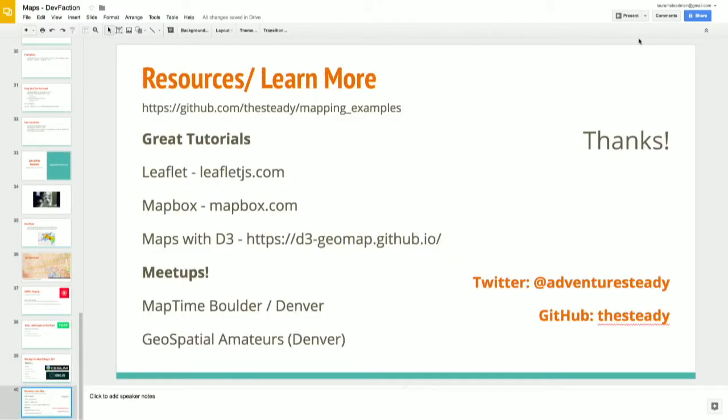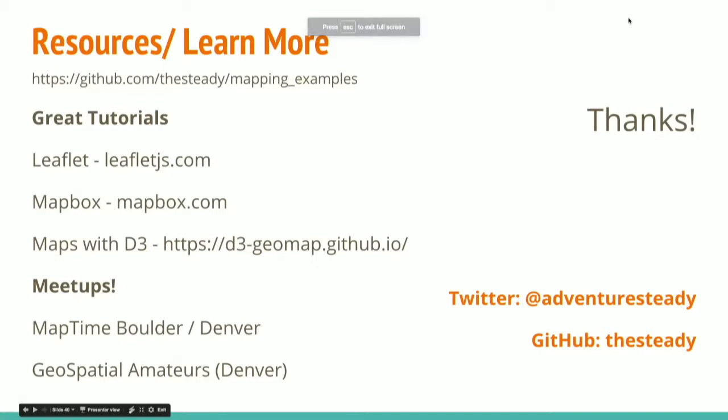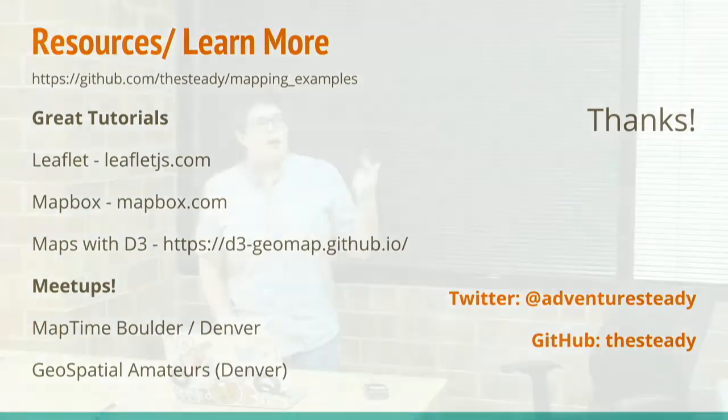That's it — I've talked enough. If you want to learn more, the GitHub repo has all the code examples I showed you. There are really great tutorials from Leaflet and Mapbox. If you're interested in mapping with D3, there's D3 GeoMap. If you're really into it, there are meetups — MapTime is affiliated with OpenStreetMap and there's one in Boulder and one in Denver. Geospatial Amateurs in Denver is a more traditional GIS group. Thank you — are there any questions?